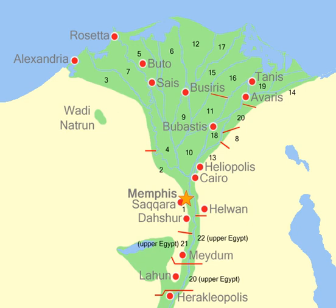Upper Egypt was divided into 22 nomes. The first of these was centered on Elephantine, close to Egypt's border with Nubia at the first cataract, the area of modern-day Aswan. From there the numbering progressed downriver in an orderly fashion along the narrow fertile strip of land that was the Nile Valley. Waset was in the fourth nome, Amarna in the 14th, and Midom in the 21st.